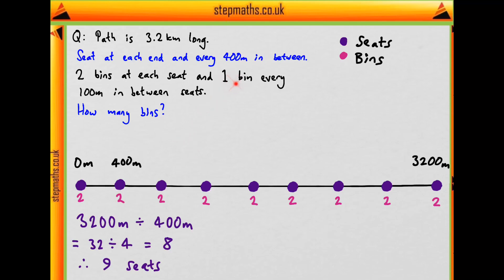And then we have 1 bin every 100 meters in between seats. So how many bins are there going to be in each connection bit? So they'd be at 100, 200, 300, then when we get to 400 we're at one of these seats. So there are going to be 3 bins in each connecting section.